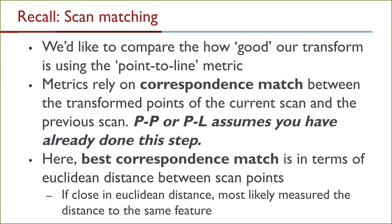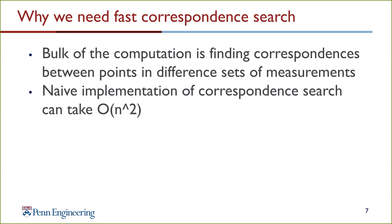The best correspondence match is determined in terms of the Euclidean distance between scan points. The principle behind this is that if two scan points, or a scan point and a line segment, are close in terms of Euclidean distance, then they are most likely to have measured the same feature. Therefore, if the transform is correct, the score with respect to the metric will be minimized.